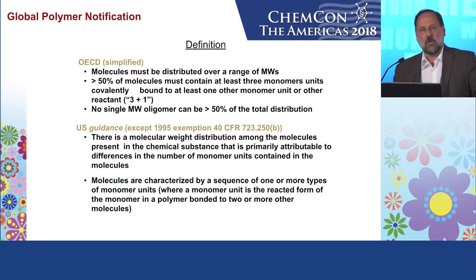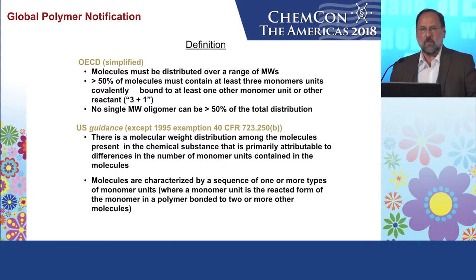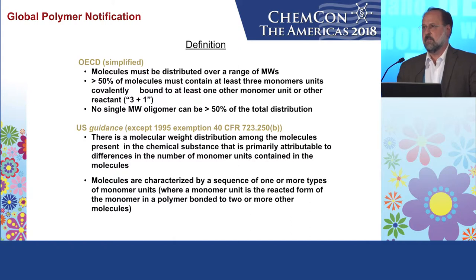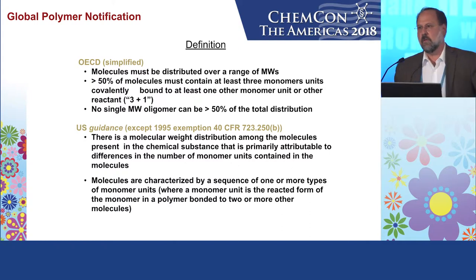Otherwise, under TSCA, all you have is guidance. The guidance says there has to be a molecular weight distribution and you have to have a sequence of one or more types of monomers bound to two or more other molecules. In spirit it's the same, but it's less prescriptive — it doesn't have the 50% cutoffs. This has the unfortunate effect that something can be a polymer in the US, cross the border into Canada, and not be a polymer anymore, which is not a good situation but something to pay attention to.